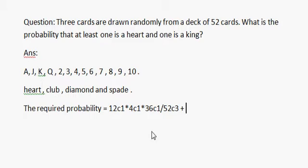12c1 because we need at least one heart. From 13 cards we separate the king card and take 12 cards from the deck of 13 cards. We take only one card, that is at least one heart, so we take here one heart card from 12 cards.